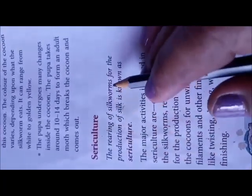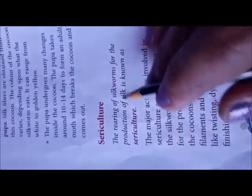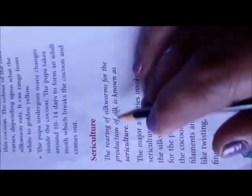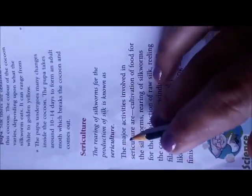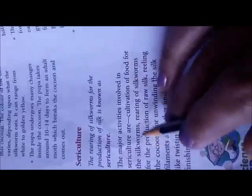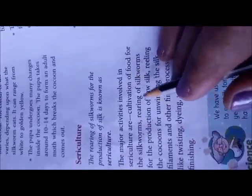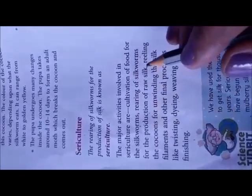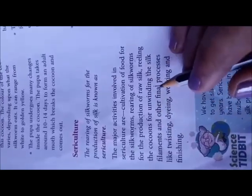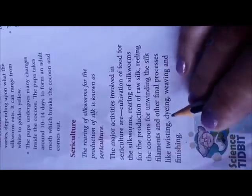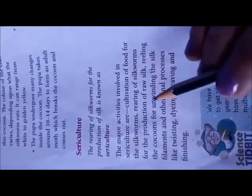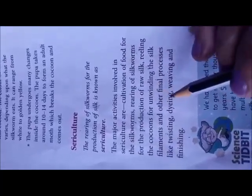Sericulture is the rearing of silkworms for the production of silk. The major activities involved in sericulture are: cultivation of food for silkworms, rearing of silkworms for the production of raw silk, reeling the cocoon for unwinding the silk filament, and other final processes like twisting, dyeing, weaving, and finishing.